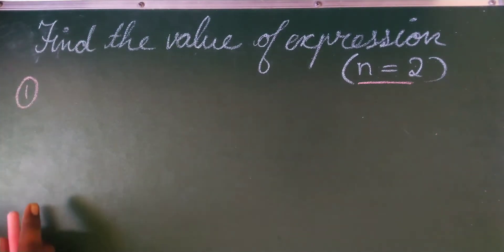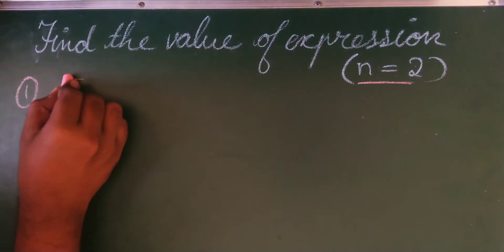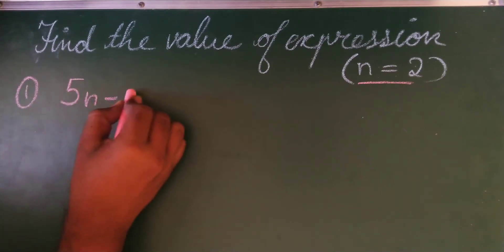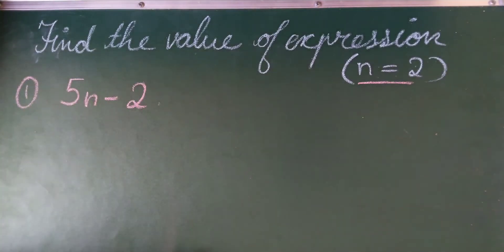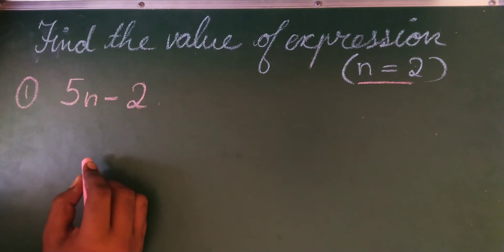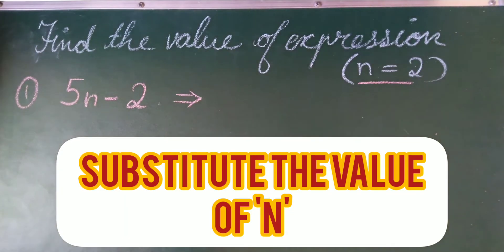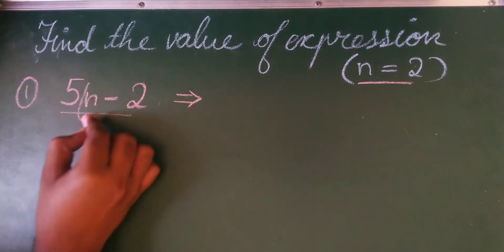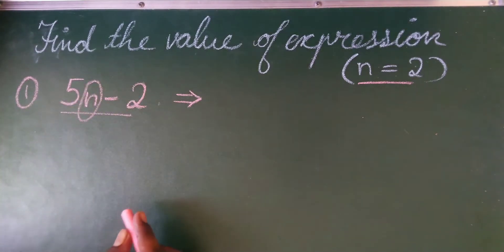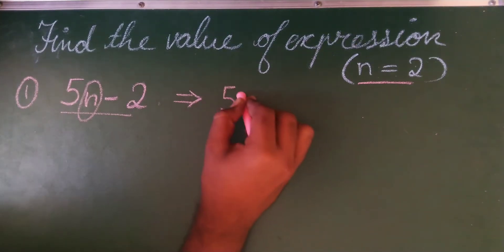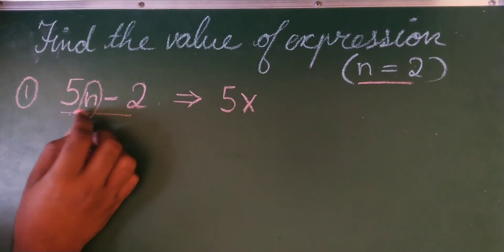First problem I will take is 5n minus 2. First thing you have to do is put the value. In this expression you have to put the n value. So 5 into, this is nothing but multiplication.